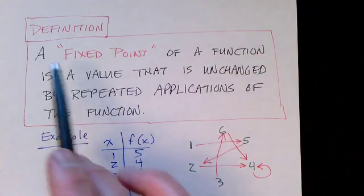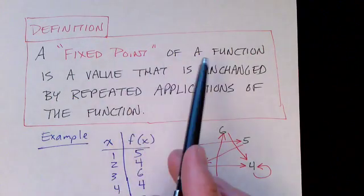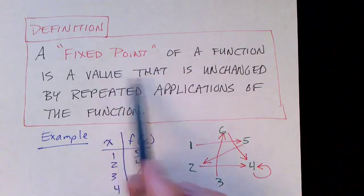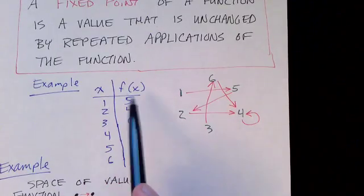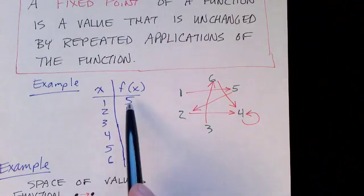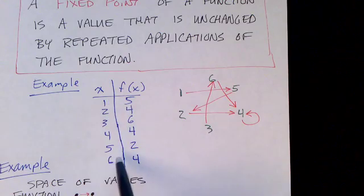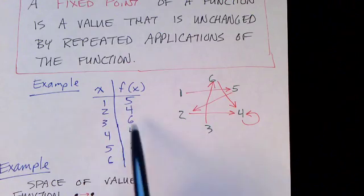Now what's a fixed point? A fixed point of a function is a value that is unchanged by repeated applications of the function. First, we need to assume that the domain and the range are the same set. Here we have the domain and range apparently being integers.